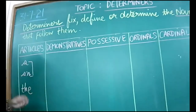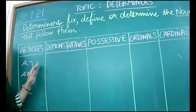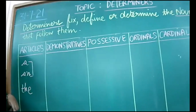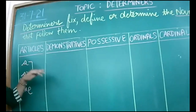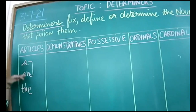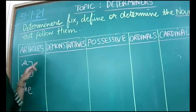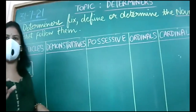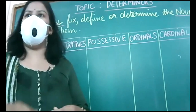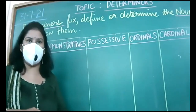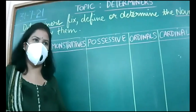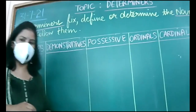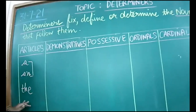After the article, the part of speech that comes is a noun. If I say 'a book,' book is a noun — it tells you one book is there. If I say 'an umbrella,' it means one umbrella. So 'a' and 'an' determine that the noun is one in number. Similarly, 'the' is a specific article which tells us about particular nouns — 'the Taj Mahal,' 'the sun,' 'the moon' — one and only. So this article determines the quantity.